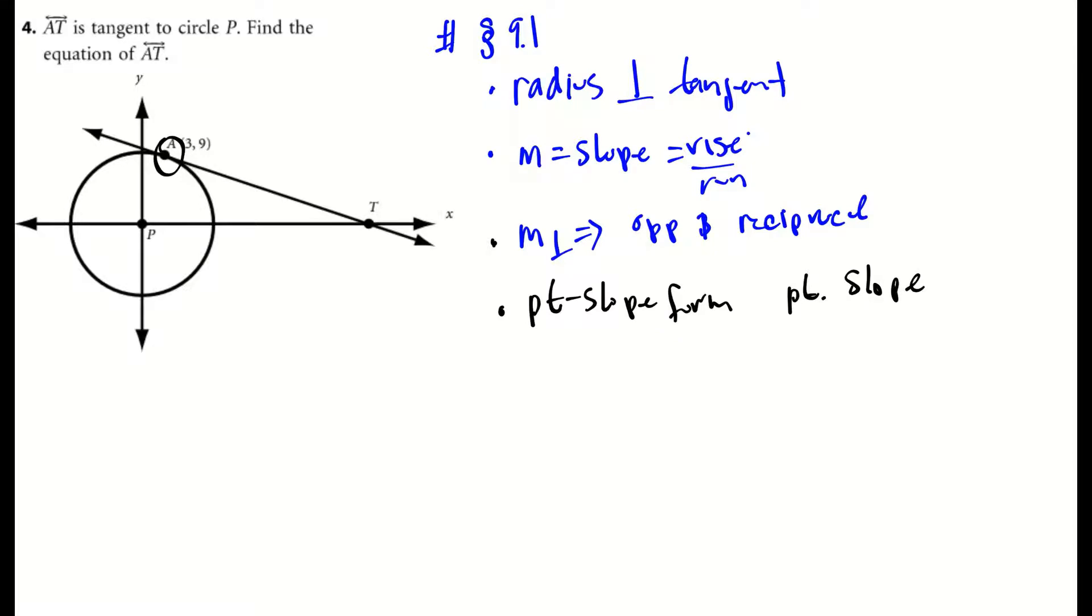So let's go ahead and begin this problem. First, let's draw in the radius from point P to point A. Now, the radius itself has a slope, so the slope of the radius is rise over run.